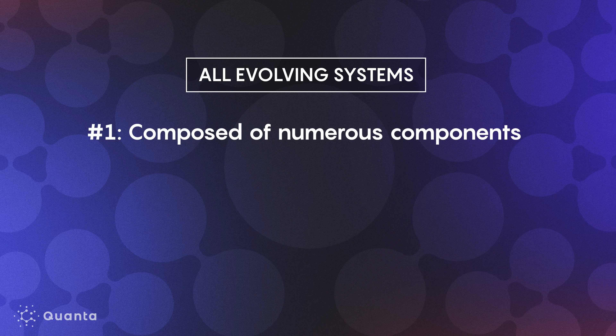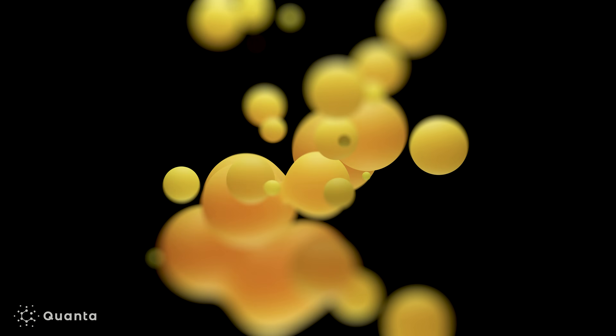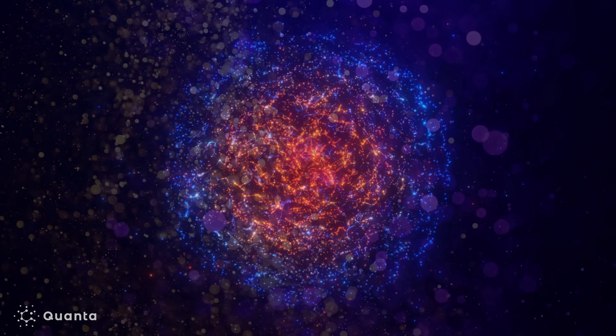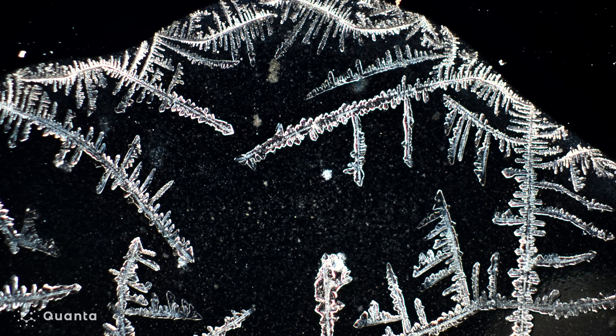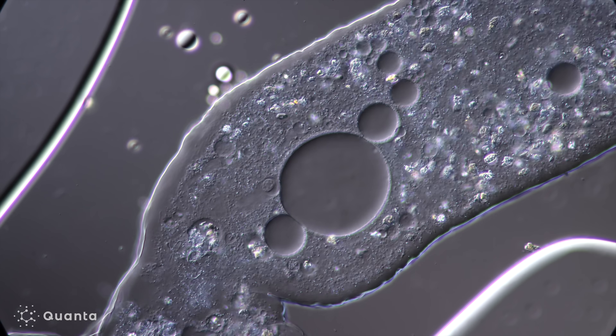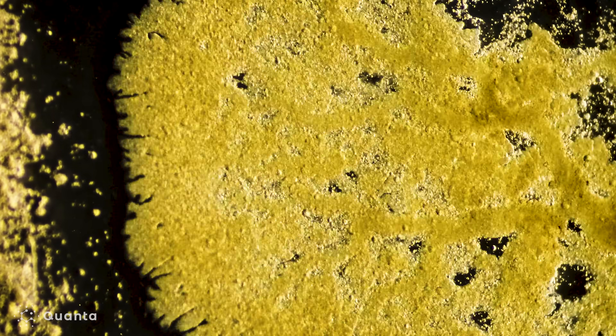But they all share three common aspects. First, it must be composed of numerous diverse interacting components — they could be atoms, molecules, cells, or individual people — and those different components can be arranged in countless, vast numbers of ways. Second, it has to have mechanisms for generating numerous configurations of those components; you have to have a way of mixing things up, sampling new configurations. And then finally you have to have some kind of selection pressure, selecting for a function. In other words, they evolve.